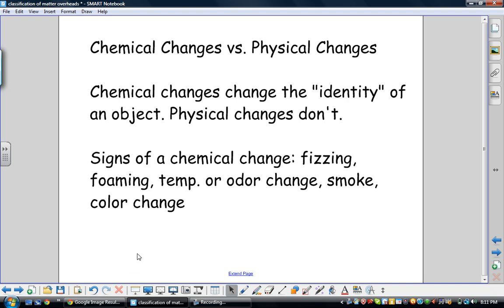Last thing we talked about was section three of the book: chemical changes versus physical changes. Chemical changes change the identity of an object, physical changes don't. Burning is a chemical change. A chemical reaction is actually a chemical change, not a physical change. If you cut something or grind it up in small pieces or paint it or melt it or evaporate it or freeze it, that's a physical change. It does not change the molecular identity. How do you know if you throw two things together into a beaker whether or not it's a chemical change? Fizzing, foaming, temperature change, odor change, smoke, color change—those sorts of things indicate that a chemical reaction or chemical change has taken place. Chemical reaction and chemical change mean the same thing.